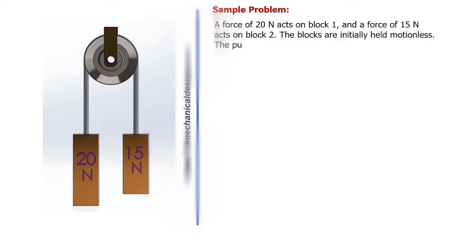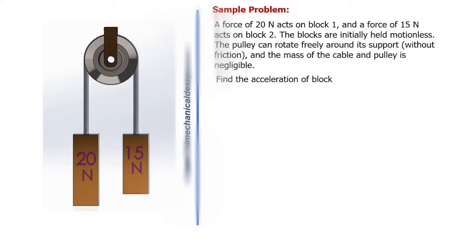The blocks are initially held motionless. The pulley can rotate freely around its support without friction, and the mass of the cable and pulley is negligible. Find the acceleration of block 1 and block 2 after the blocks are released.